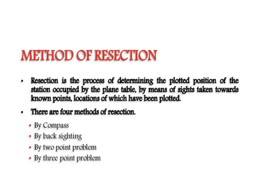The method of resection is the process of determining the plotted position of the station occupied by the plane table, by means of sights taken towards known points whose locations have been plotted earlier. There are 4 methods of resection: by compass, by back sighting, by two-point problem, and three-point problem.